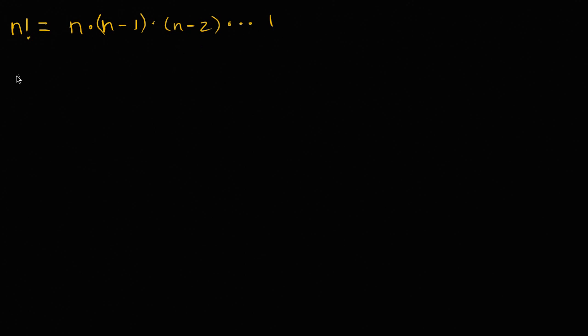So for example, and all of this is review, if I were to say three factorial, that's going to be three times two times one. If I were to say two factorial, that's going to be two times one. One factorial, by that logic, well I just keep decrementing until I get to one, but I don't even have to decrement here. I'm already at one, so I just multiply it by one.